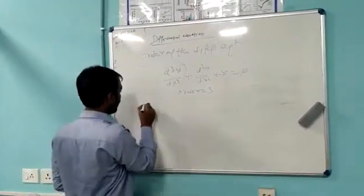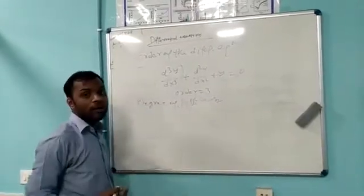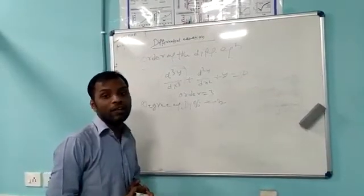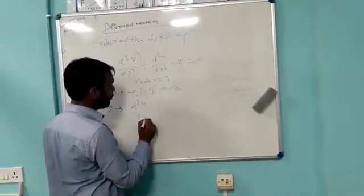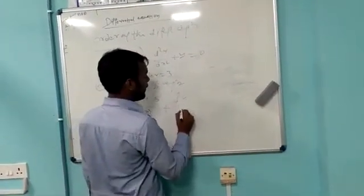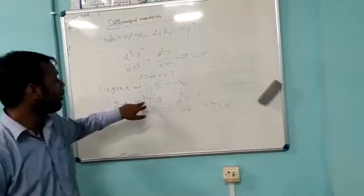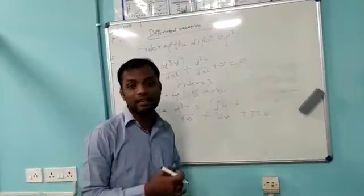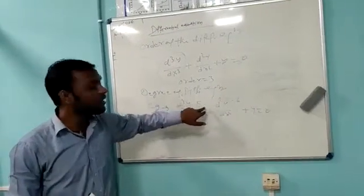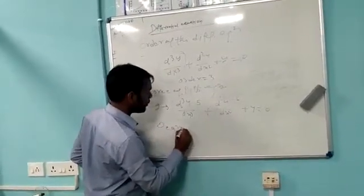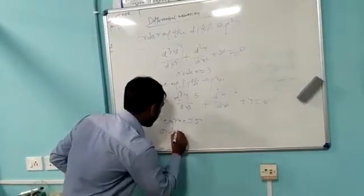The other term is degree. The degree of a differential equation is the power of the maximum order of derivative. For example, consider (d³y/dx³)^5 plus (d²y/dx²)^6 plus y equal to 0. Here the powers are 5 and 6, and the orders are 3 and 2. Since the maximum order is 3, the degree is the power of that term, which is 5. So the degree is 5 and the order is 3.